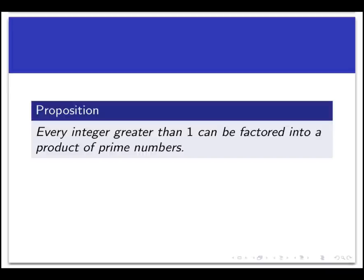By product we mean that either the integer itself is a prime number, so it's like a product with just one term in it, or it's a bunch of primes multiplied together. You might have thought this was an axiom of arithmetic, something that we just accept without proof.